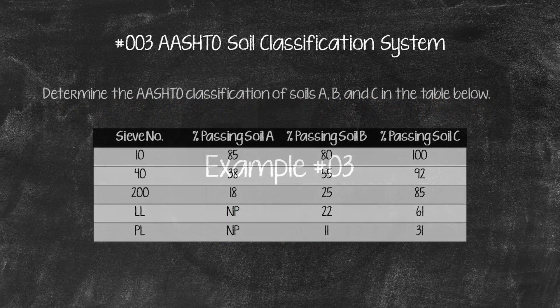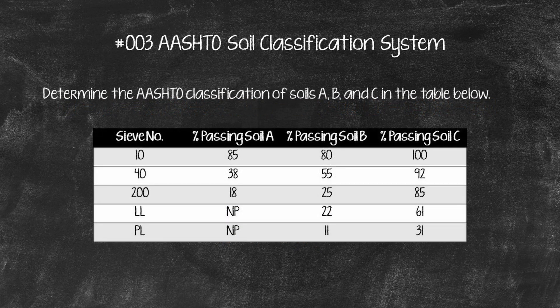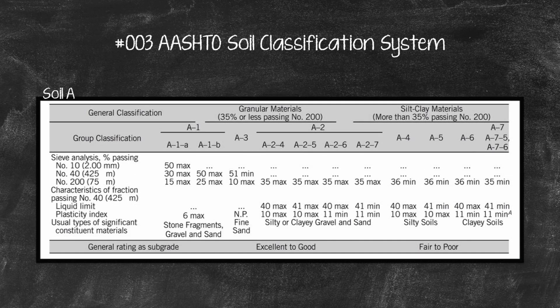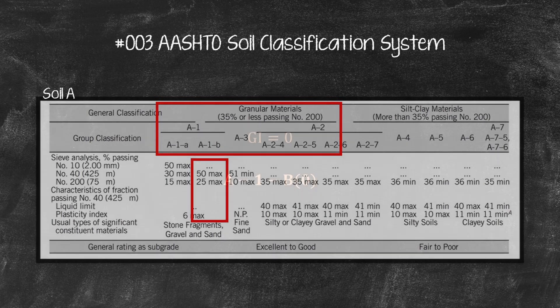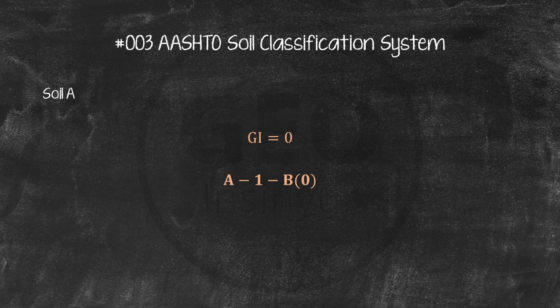Example number 3. Determine the AASHTO classification of soils A, B, and C in the table below. Solutions. Sample A. Start at the left, and compare sample results to the table criteria. The percent passing the 200 sieve, 18%, is less than 35%, cohesionless soil. Both LL and PI are zero, non-plastic soil. The first match will be soil type A1B. The GI for A1B soil is zero. Classification is A1B, 0.